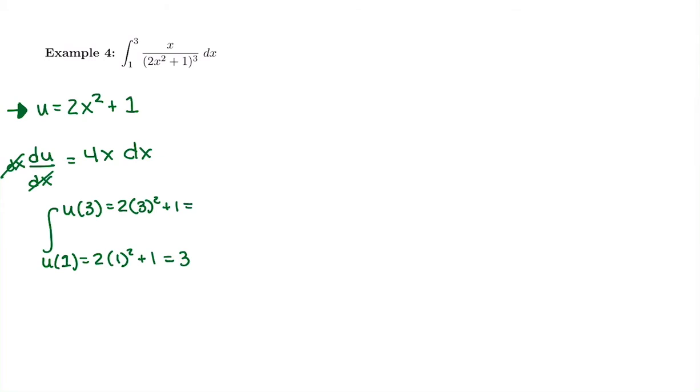So remember to do PEMDAS. Don't do 2 times 3 is 6 and then square it. It is 3 squared, which is 9. The exponent goes first. 9 times 2 is 18, plus 1 is 19.